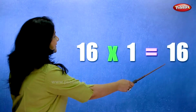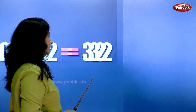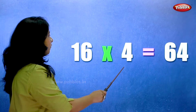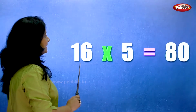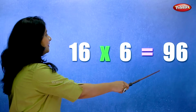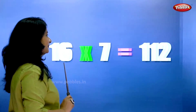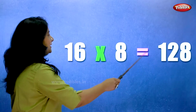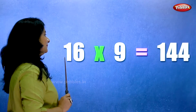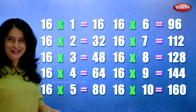16 ones are 16. 16 twos are 32. 16 threes are 48. 16 fours are 64. 16 fives are 80. 16 sixes are 96. 16 sevens are 112. 16 eights are 128. 16 nines are 144. 16 tens are 160. Let's learn the table of 16 one more time.